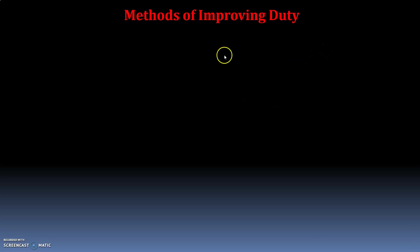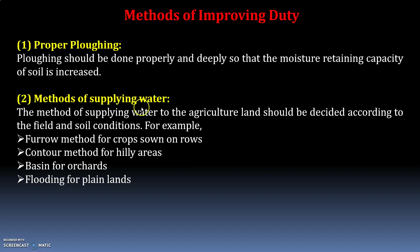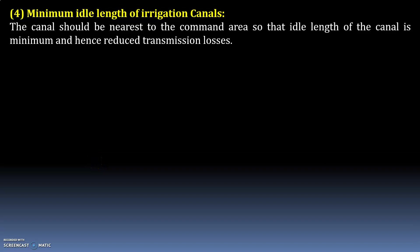Next, methods to improve duty. First, proper ploughing should be done deeply so that moisture-retaining capacity of soil is increased. Second, the method of supplying water should be decided according to field and soil conditions — for example, furrow method for row crops, contour method for hilly areas, basin method for orchards, flooding for cultivated lands. Canal lining reduces percolation loss. Canals should be nearest to the command area to minimize idle length and reduce transmission losses.